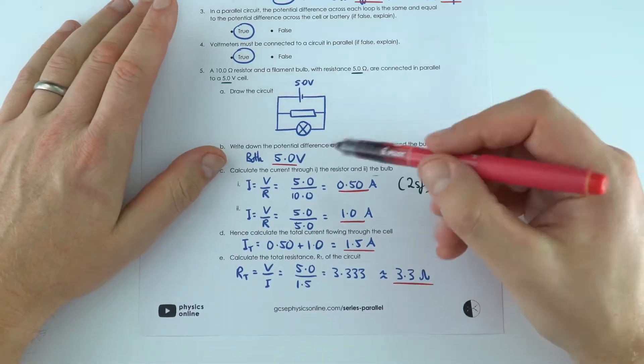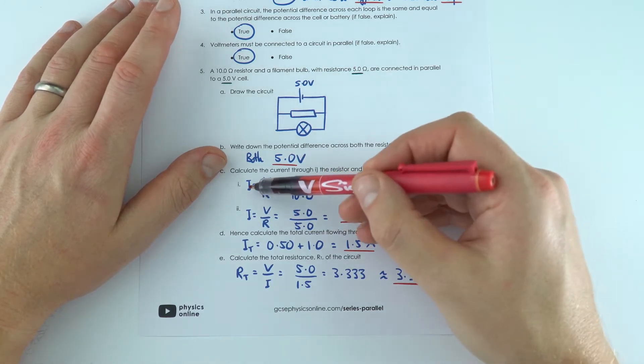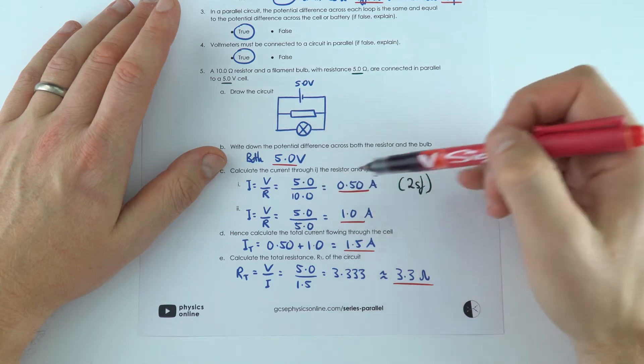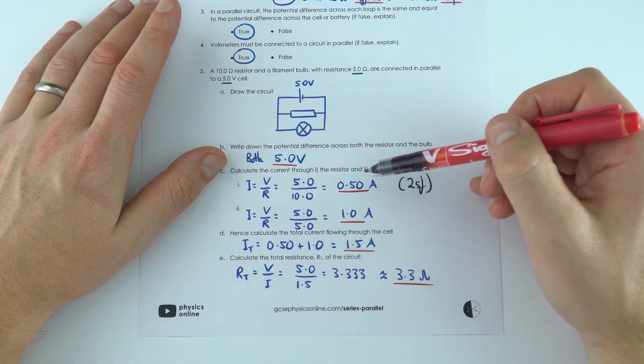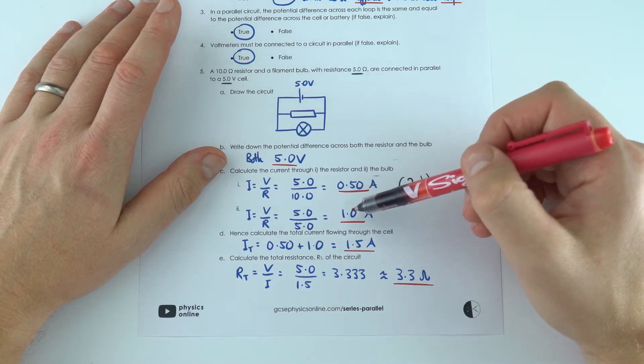We then did some calculations again using the equation V equals I times R. We want to find the current. We know the potential difference across each of these is 5. We know their resistance to find that across the resistor we've got 0.5 of an amp and across the bulb we've got 1 amp.